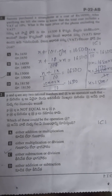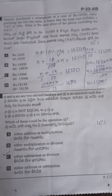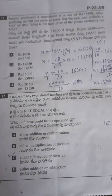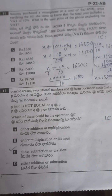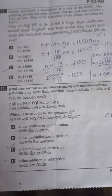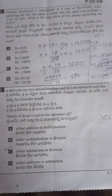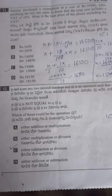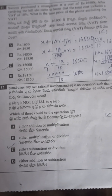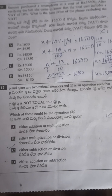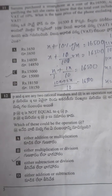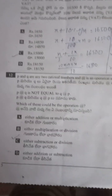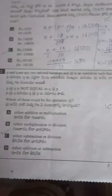Simplifying: x plus 0.1x equals 16,500, so 1.1x equals 16,500, giving x equals 15,000. Next, twelfth question: P and Q are rational numbers. P added to Q is not equal to Q added to P — this refers to the commutative property. The commutative property does not hold under subtraction and division. Answer is option C.